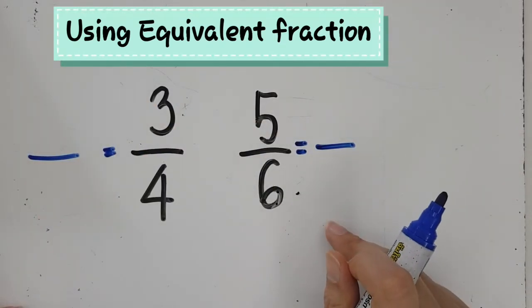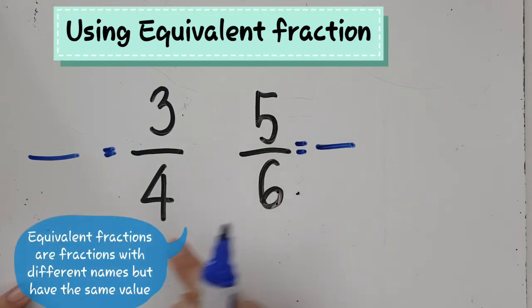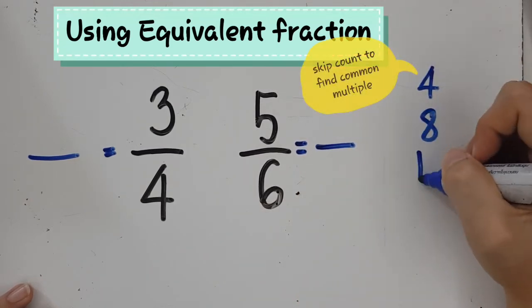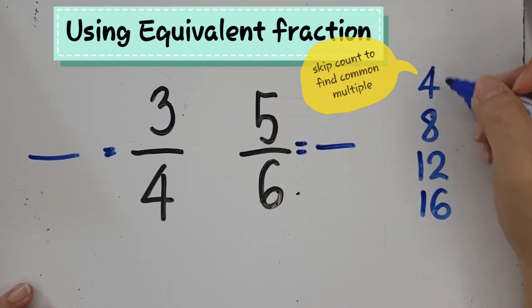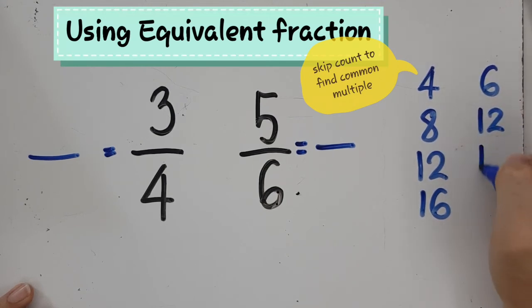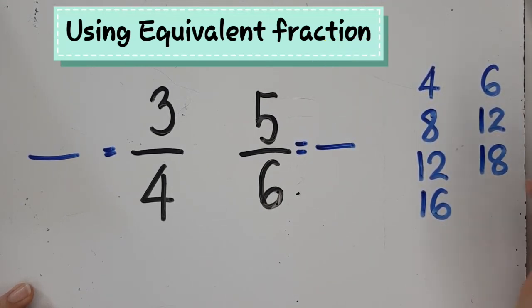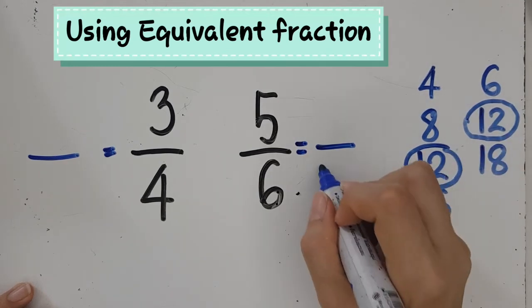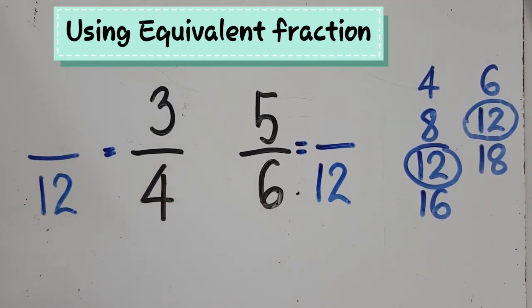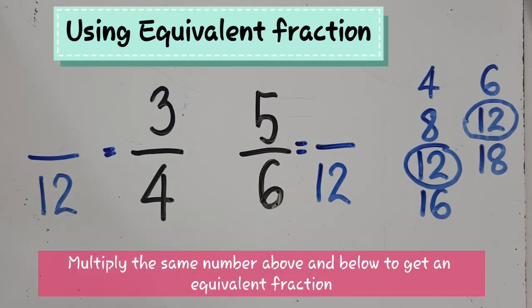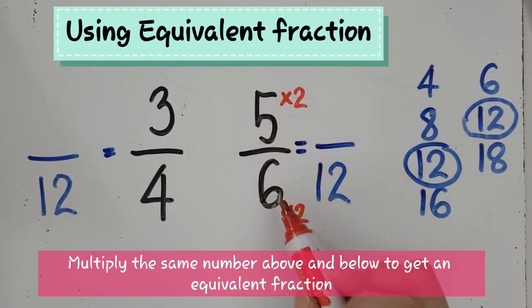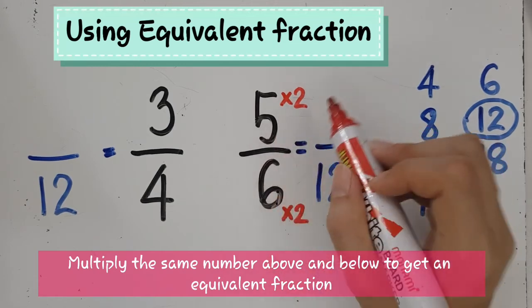Remember, equivalent fractions are fractions with different names but show the same amount. If I don't know which denominator to choose, I'm going to skip count in fours and also skip count in sixes. Can you find the common number? They both can go to 12. So I'm going to choose 12 as the common denominator. Now, how do I get the equivalent five-sixths into something-twelfths? I multiply by two in the denominator and on top: six times two gives me twelve, and five times two gives me ten.